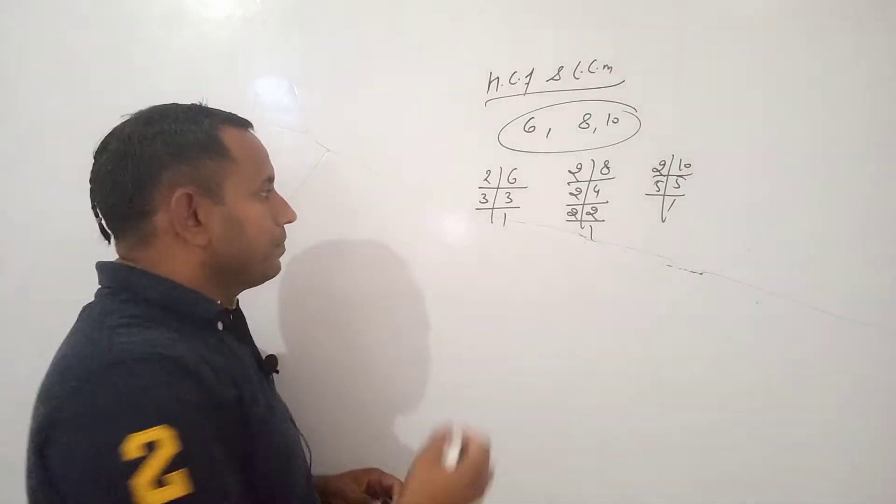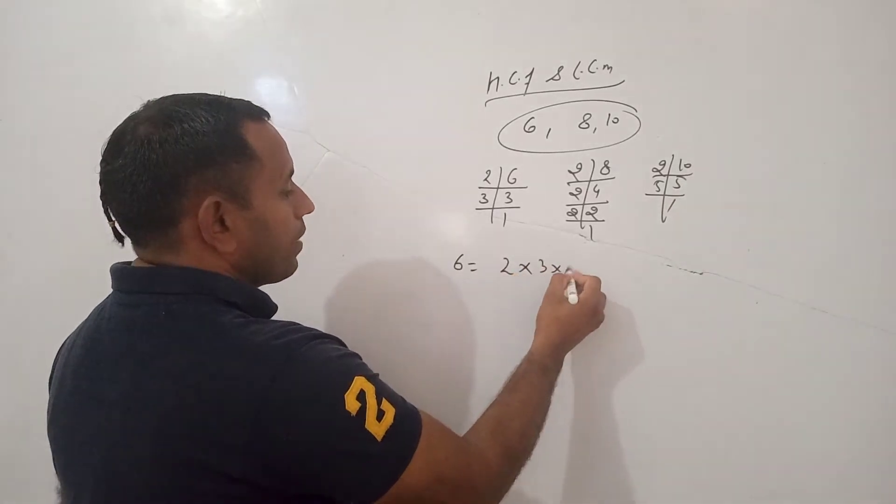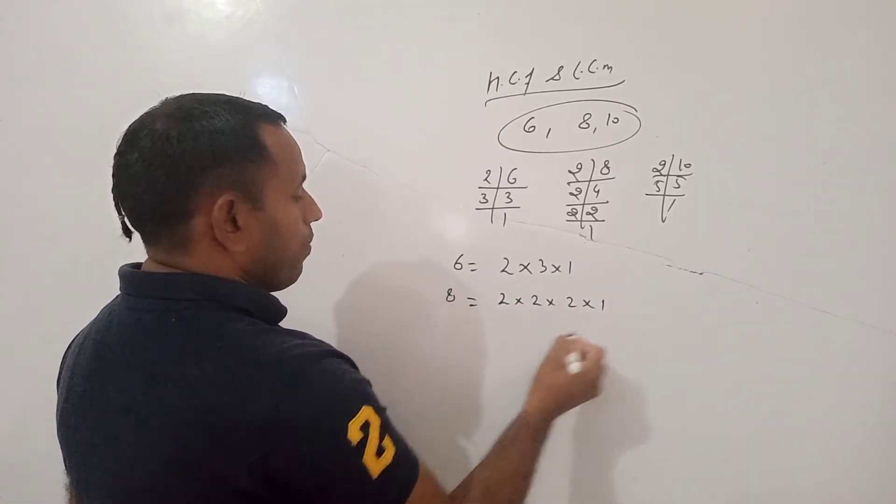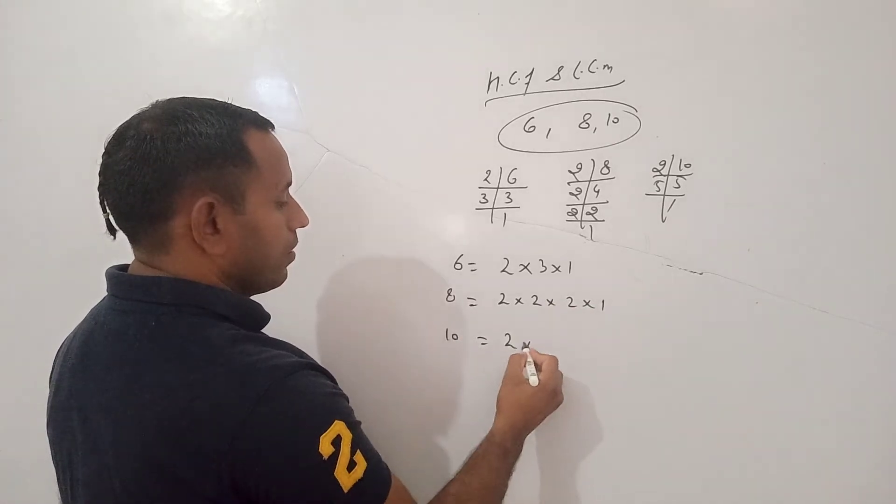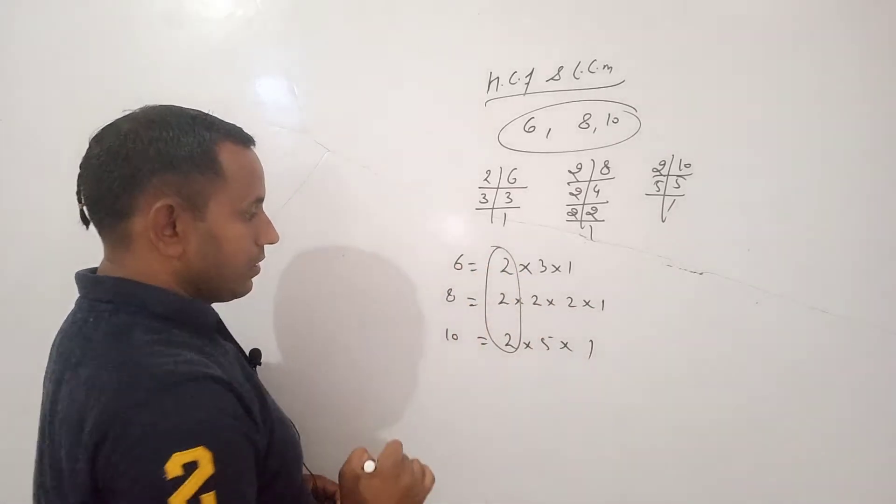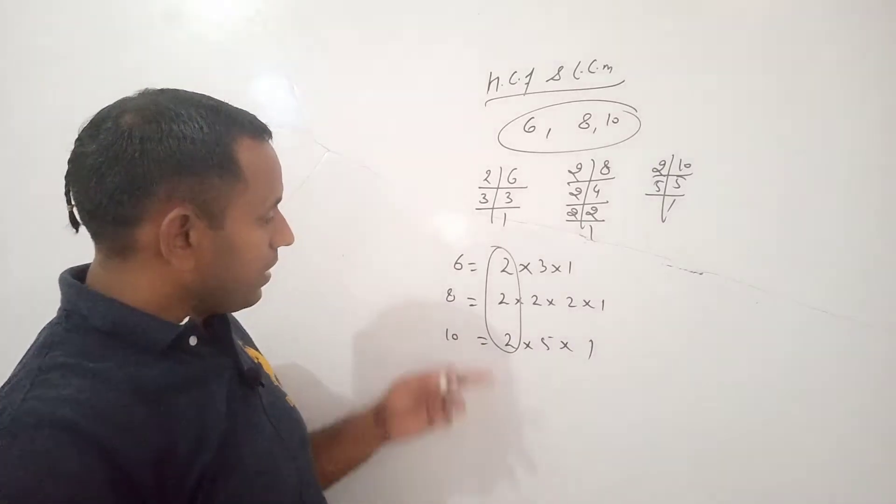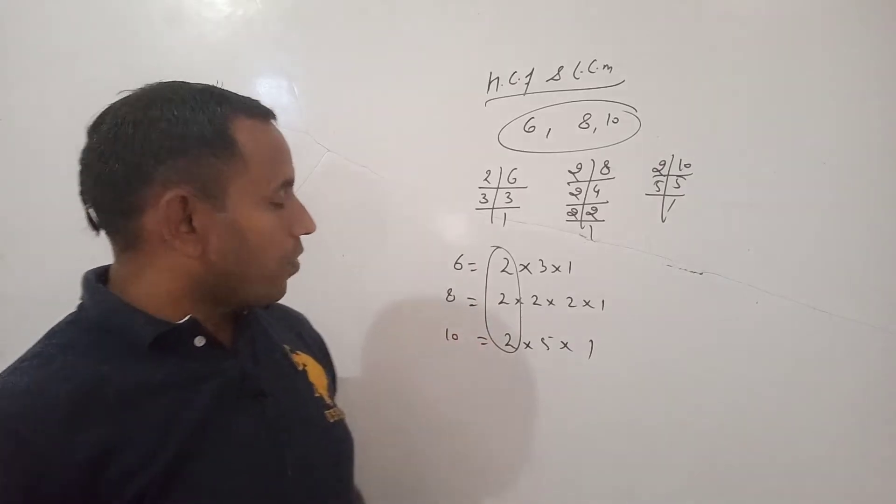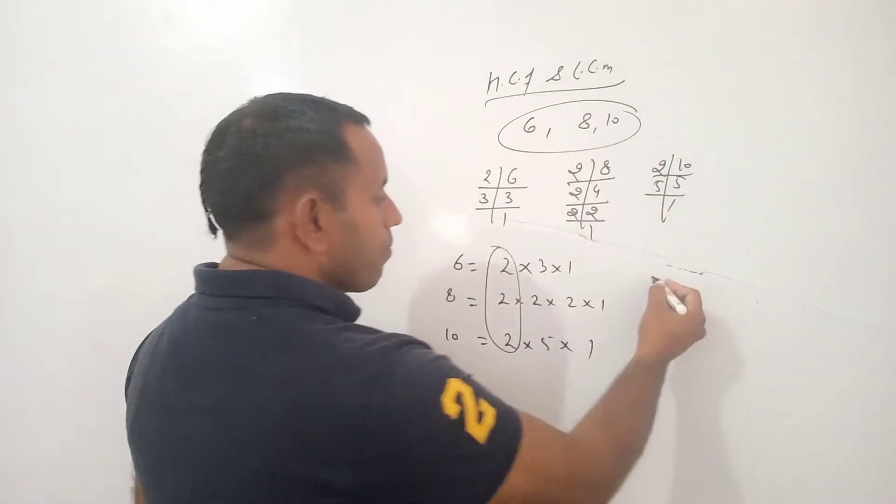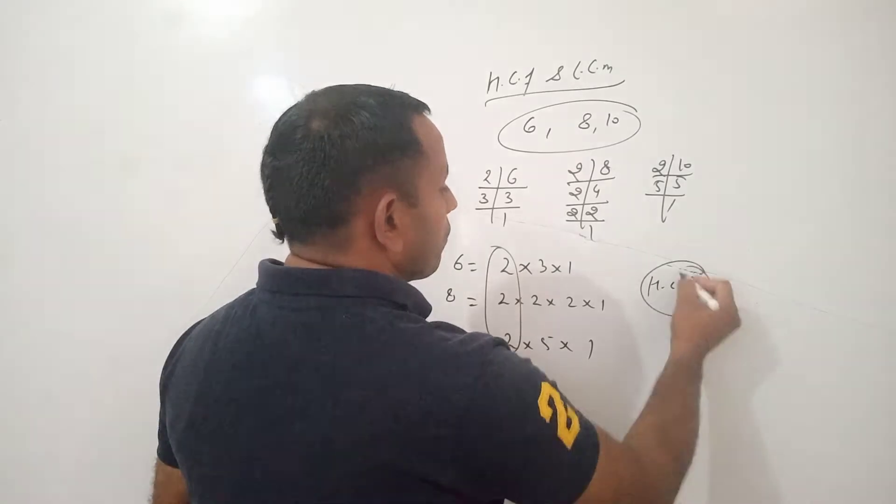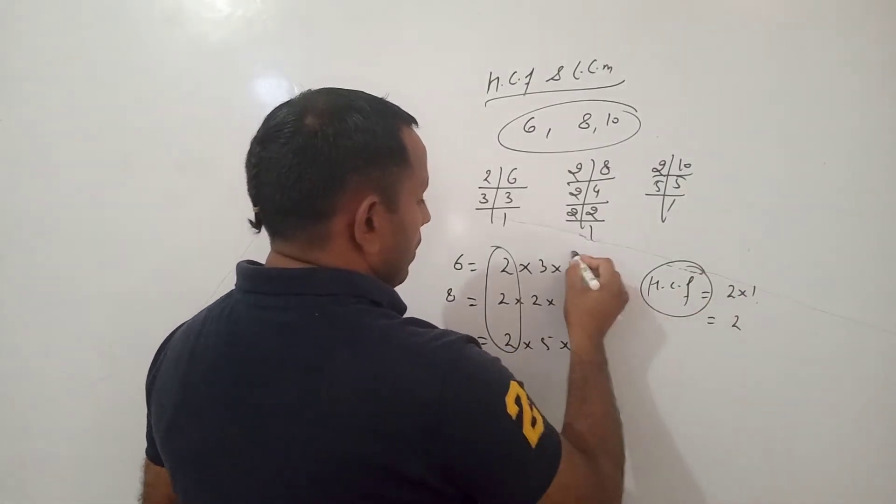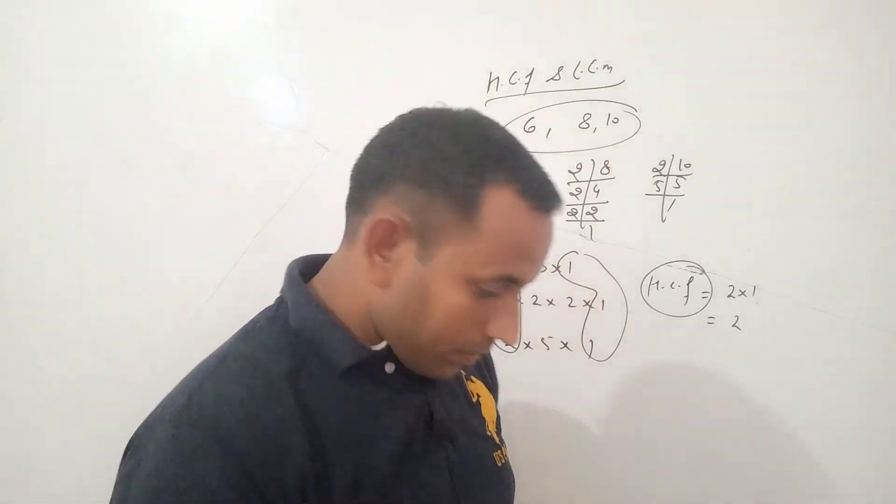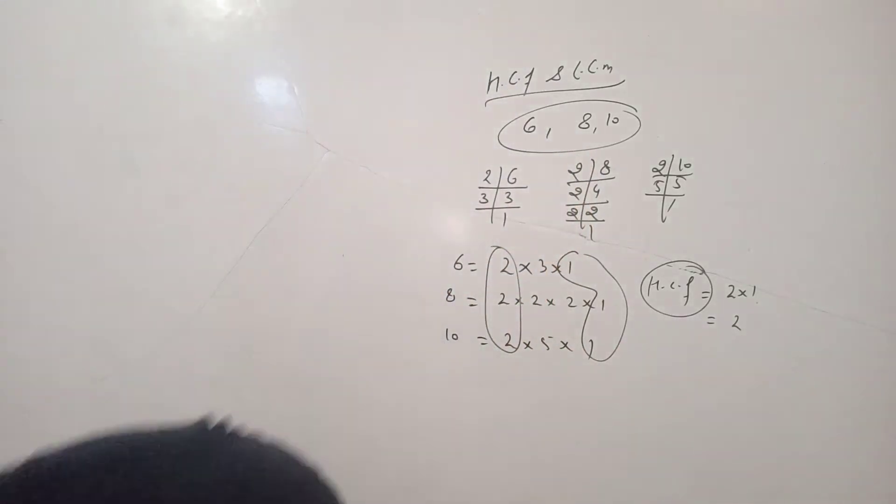So now find out what is the common number in all the factors. So let us see. We can see easily 2 is the highest number which is common from all the three numbers. So, HCF of these numbers is 2 into 1, that is 2. This is the HCF.